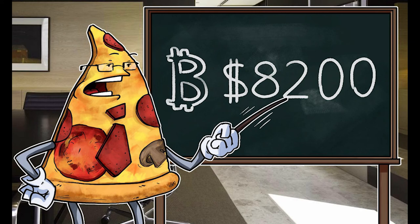Making the two pizzas Laszlo Hanich ordered from Papa John's for 10,000 BTC cost $41. A ceremonial occurrence in Bitcoin's history.